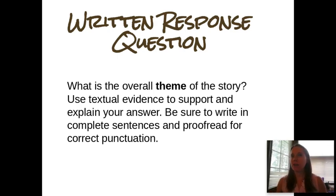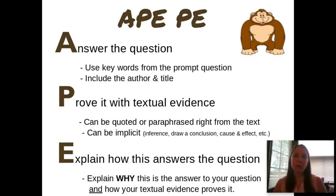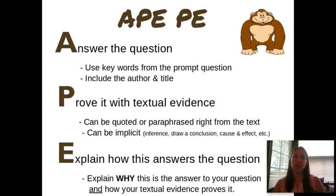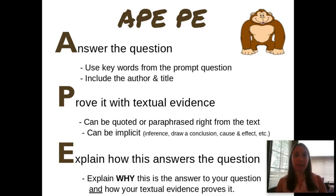I'm hoping all of you are thinking about how you could set this up — and I'm hoping you said APEPE. Reminder: in seventh grade, we expect you to use multiple pieces of textual evidence to support your answer, so I would suggest setting that up as APEPE. You would start with your A — answer the question. The question was: what is the theme of the story? So you want to use those keywords from the prompt, include the author and title. So: in Red Kayak by Priscilla Cummings, the main theme is — and you answer what you think the main theme or lesson is.